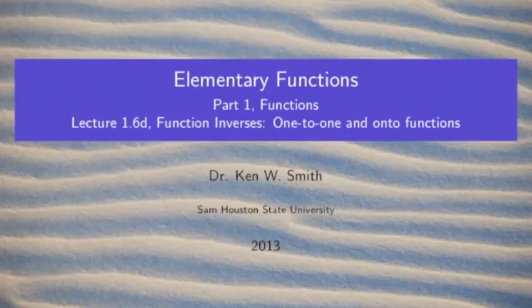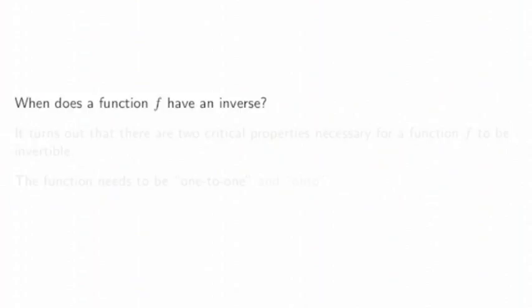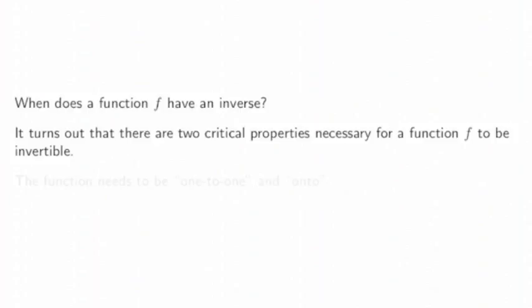In this lecture, we look at one-to-one and onto functions. When does a function f have an inverse? It turns out there are two critical properties necessary for a function to be invertible. It needs to be one-to-one, and it needs to be onto.